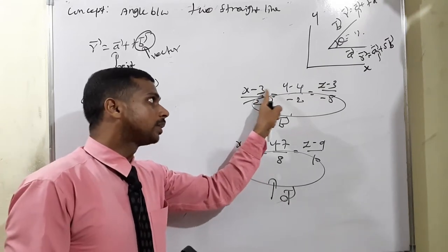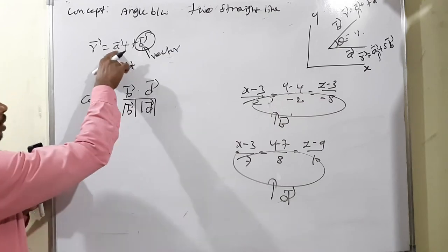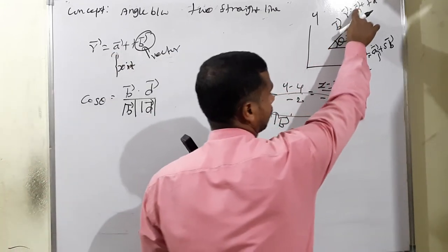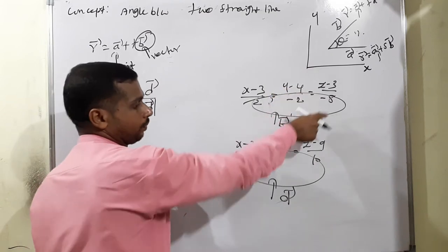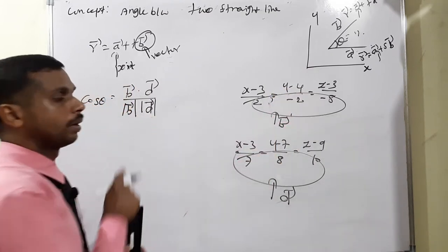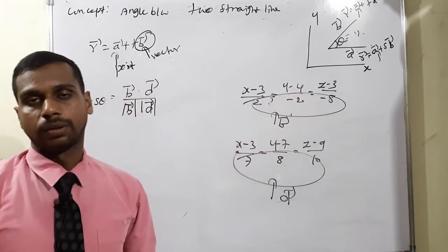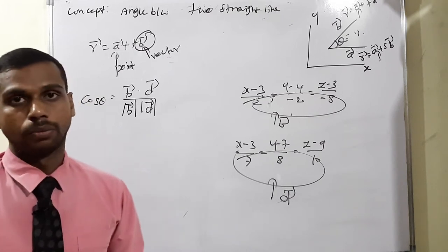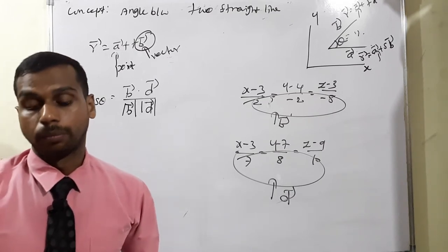So the denominator parts only are considered as b vector and d vector. The numerator part represents the point. Therefore, cos theta equals b·d divided by modulus of b times modulus of d — this gives the angle. I will continue to the next problem.